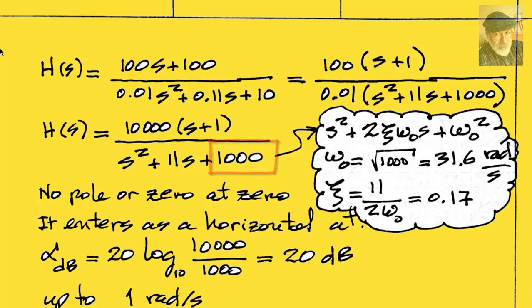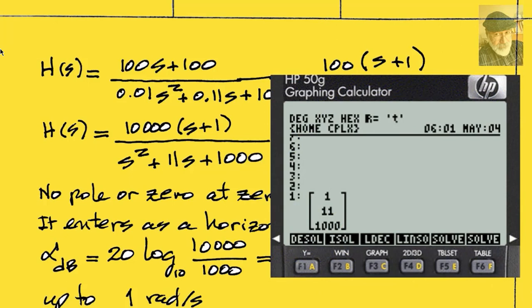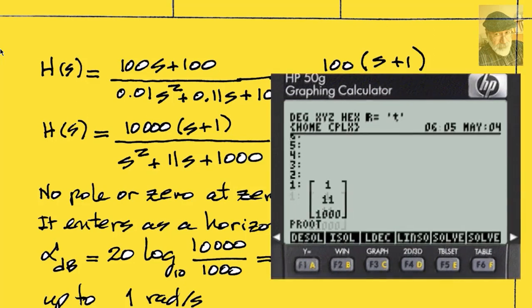How can we be sure? Well, find the roots of the polynomial equation ruled by the denominator. In the HP50G, we enter a vector with the coefficients of the quadratic polynomial 1, 11, 1,000, and issue the command P root.